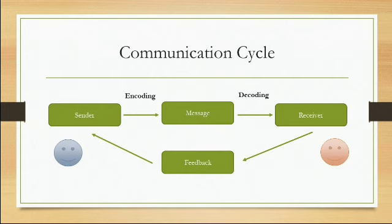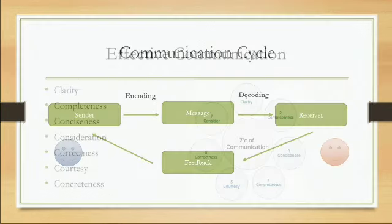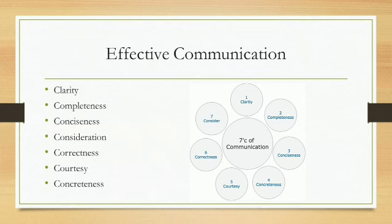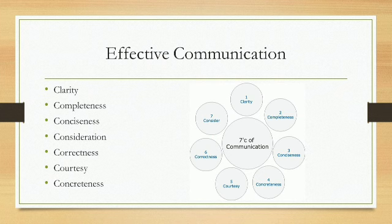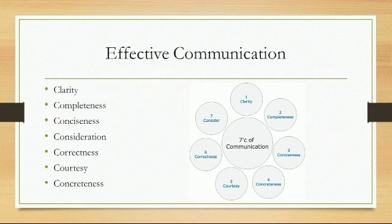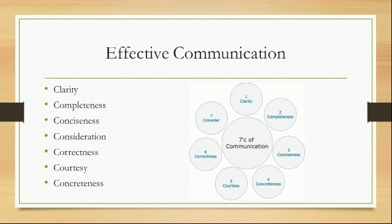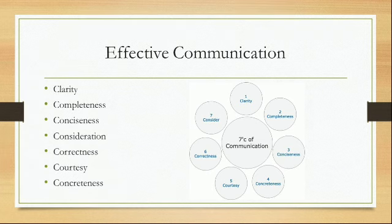Now let us see what are the various means for effective communication. Communication can only be effective when the receiver understands the message as desired by the sender. Let us talk about the seven C's which are necessary for effective communication. The first one is clarity — the communication should be in a simple language so that the receiver can easily understand the message. The second one is completeness — the message should contain all the necessary information and the sender should answer all the questions asked by the receiver to accomplish the predefined goals.